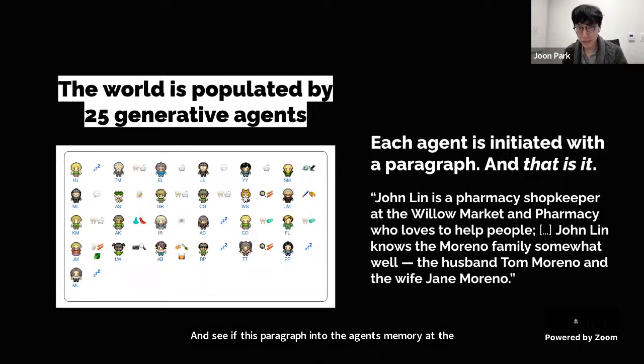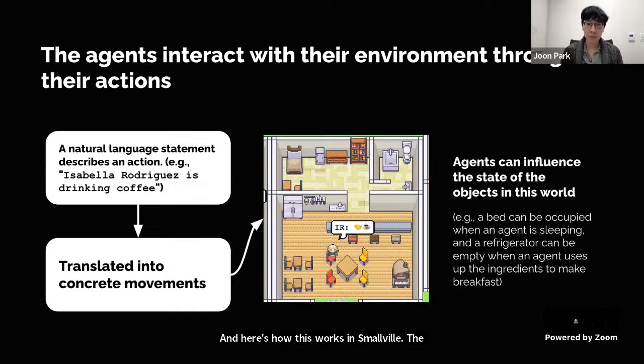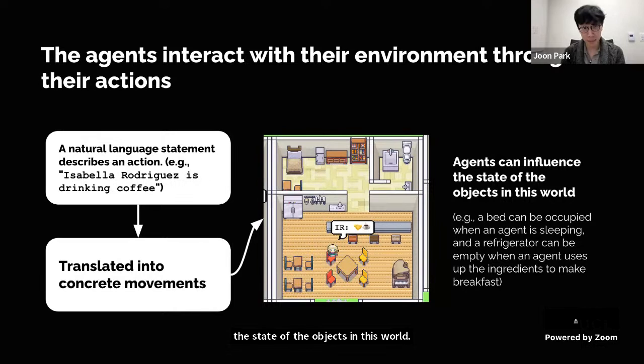That is all the input we ever give these agents. They then interact with their environment through their own actions. Agents generate a natural language statement describing their current action — for example, 'Isabella Rodriguez is drinking coffee' — then translate this into concrete movements in the sandbox game world with automatically generated emojis. They also influence the state of objects: a bed can be occupied when an agent sleeps, and the refrigerator can be empty when an agent uses ingredients to make breakfast.